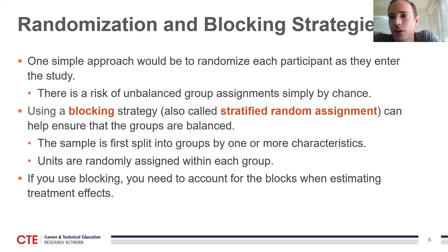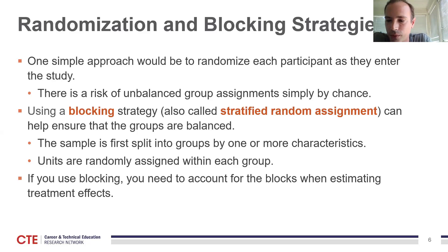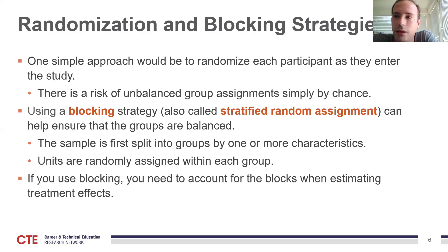To address this, we often use a stratified random assignment or blocking strategy to help ensure that treatment and control groups are balanced. The sample is first split into groups on the basis of one or more characteristics, like gender. Within each group, units are randomly assigned. The treatment assignment probability can vary by group — for example, you might split the sample by baseline math scores and assign 50% of high-scorers to treatment and 75% of low-scorers to the control group. If you use a blocking procedure, you need to control for blocks later when estimating treatment effects.